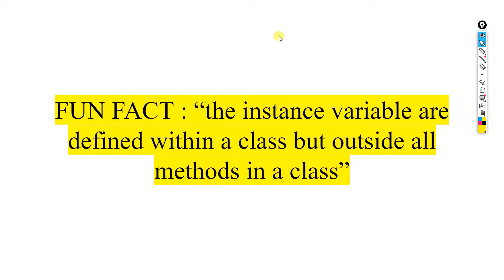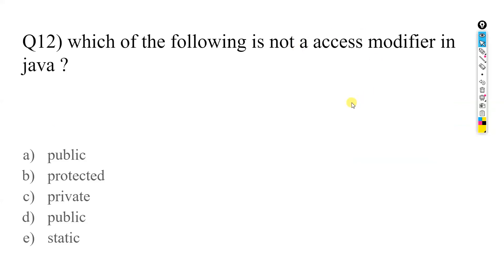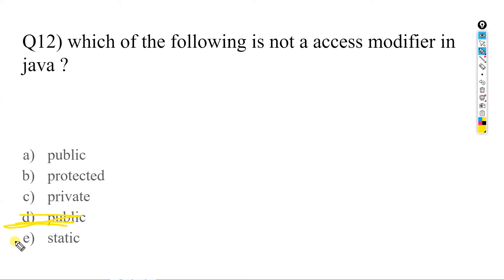Fun fact: instance variables are defined within a class but outside all methods. Next question: which of the following is NOT an access modifier in Java? The options are public, protected, private, public again, and static. The answer is E — static is not an access modifier in Java.